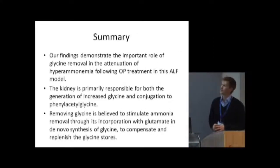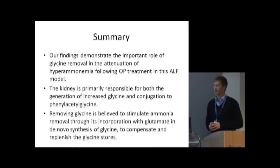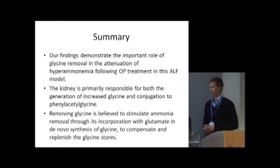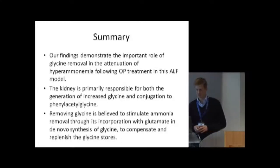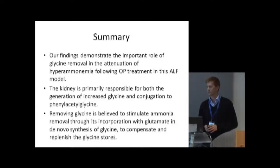Our findings demonstrate an important role of glycine removal in the attenuation of hyperammonemia following OP treatment in this acute liver failure model. We believe that the kidney is primarily responsible for both the generation of the increased glycine and its conjugation to phenylacetylglycine. Removing glycine is believed to stimulate ammonia removal through incorporation with glutamate in the normal synthesis of glycine, to compensate and replenish glycine stores.